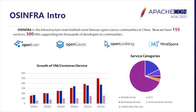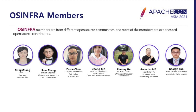To be accurate, OpenEuler, OpenGauss, OpenLooker, and MindSpore are our four major clients. Although they belong to different technology fields, they all share two themes in common: started by Huawei and supported by our team. We started by the end of 2019 along with the foundation of the OpenEuler community. Now we have more than 155 services including web portal, CI/CD, and communication and collaboration services. There are about eight Kubernetes clusters and more than 500 virtual machines running day and night behind these communities.